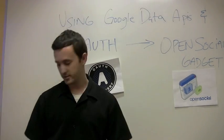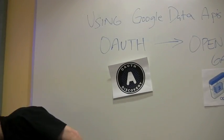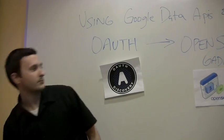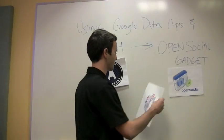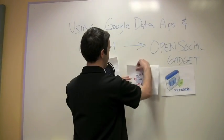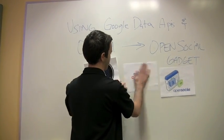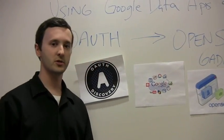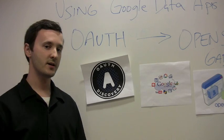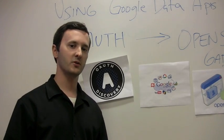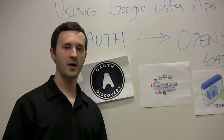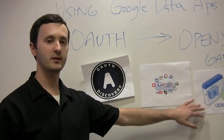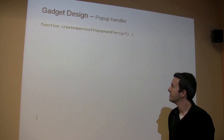Lastly, we're going to go into the Google Data JavaScript client library, which is a great JS library for reading and writing data on the web. It makes OpenSocial gadgets particularly easy.